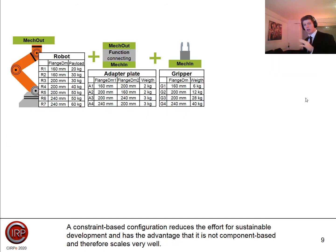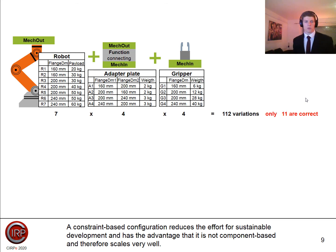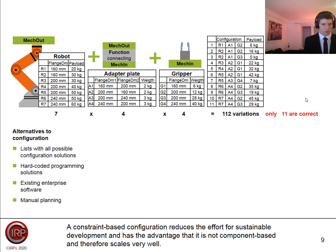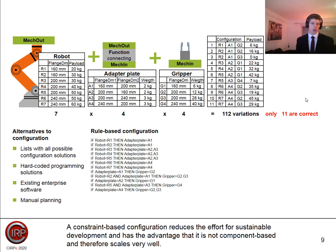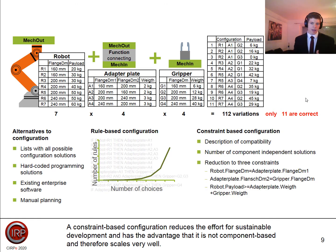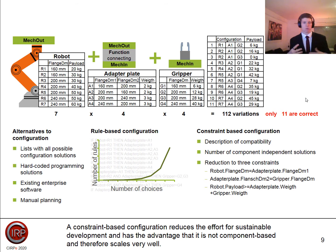The next step: if you know the scope of function, then you can start with knowledge acquisition. But there are different ways to build knowledge-based configurators. For example, we build a configurator of just three parts for simplification — a robot, adapter plate, and a gripper. There are many variations but only a few correct ones. You can build it with a list of all correct variations, but this doesn't scale. You can make it rule-based — if this, then that — but it also doesn't scale because you need rules for every detail. We do it constraint-based, because it is much more compact and condensed knowledge.